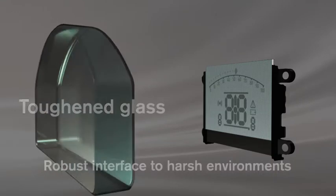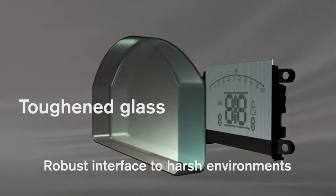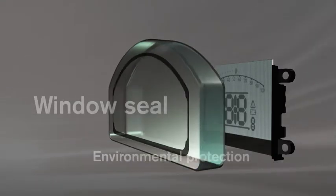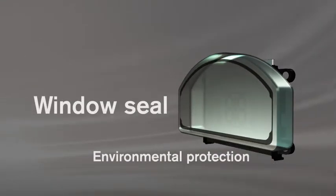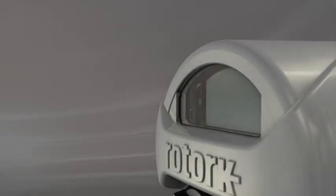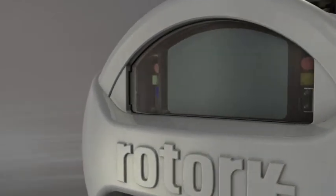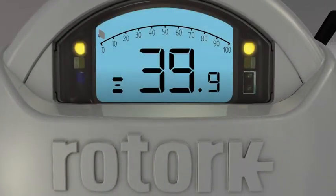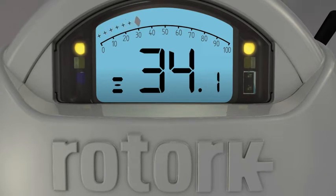The window is sealed and protected by toughened glass. The display will show any valve alarms, including torque trips.